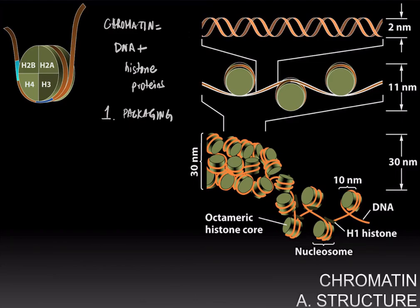If you took the DNA from a human cell out and stretched it like a string, it would be about three meters long, whereas the whole genome fits into a cell that's only about 10 microns long. So the chromatin, or the histone proteins, help package such a large amount of DNA into a very small space. The other role that chromatin plays is in gene regulation, which we are about to discuss at length.